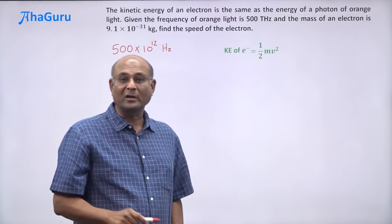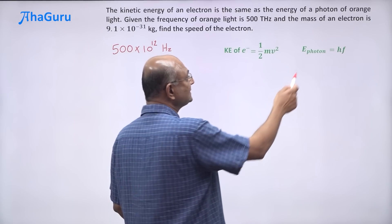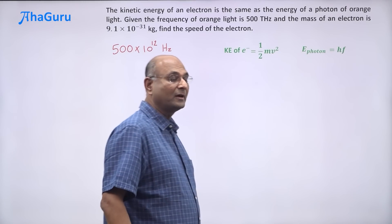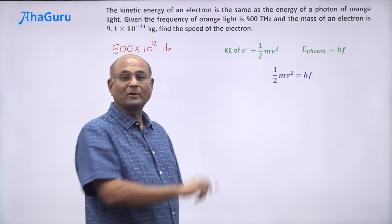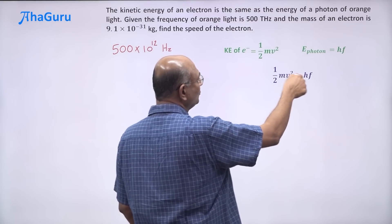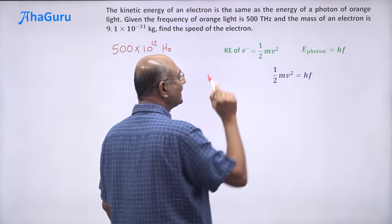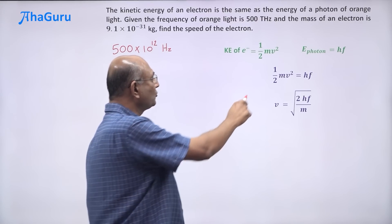We can use the formula that kinetic energy is 1/2 mv². What about the energy of a photon? Einstein's equation tells us it is h into f. Now these two are equal. So 1/2 mv² is equal to hf. So taking the 2 there and the m down there, we can write v is root of 2hf by m.